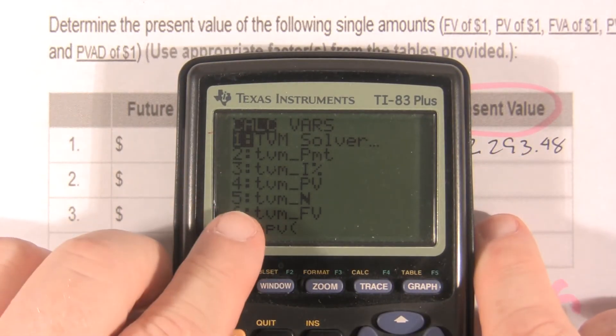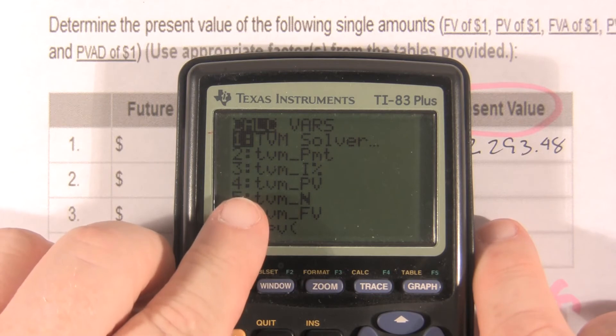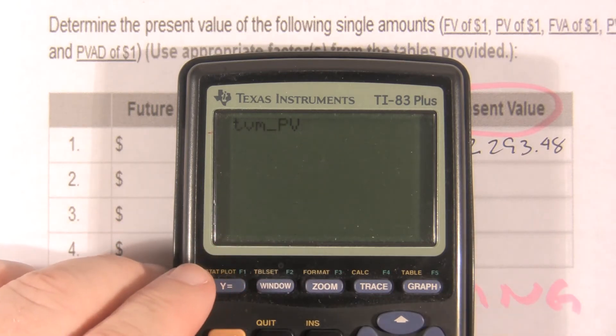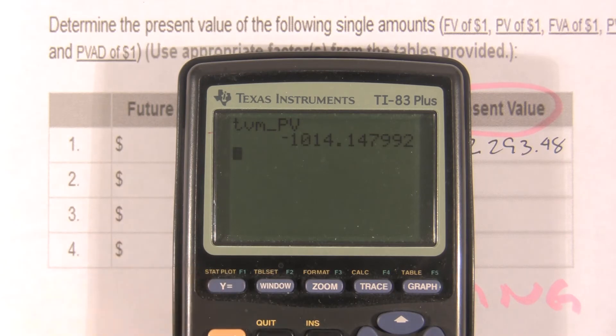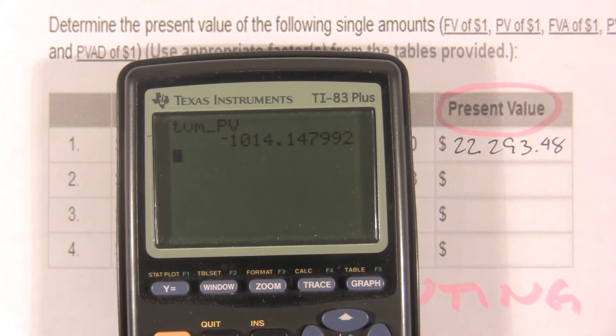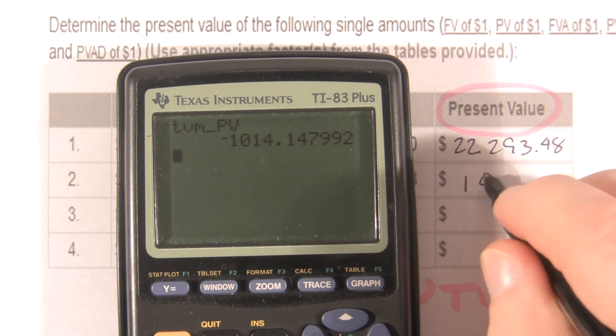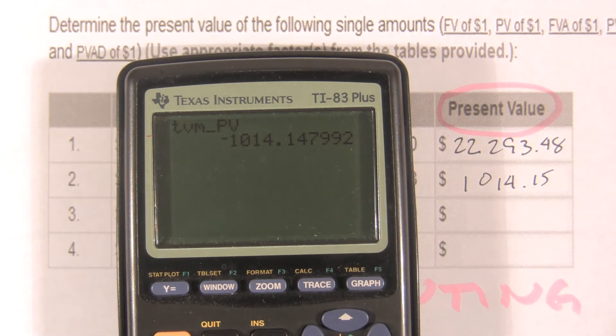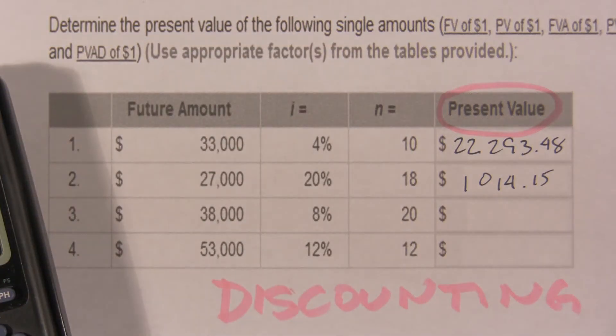We're looking for present value. So, present value is option 4, TVM, time value of money, 4. Present value, enter. It tells us if we put $1,014.15 away now. And if we wait 18 years and we can get 20%, we will end up with $27,000. Discounting.